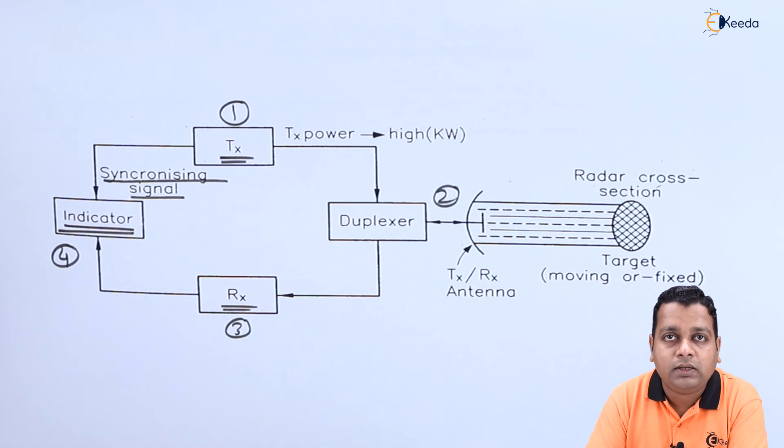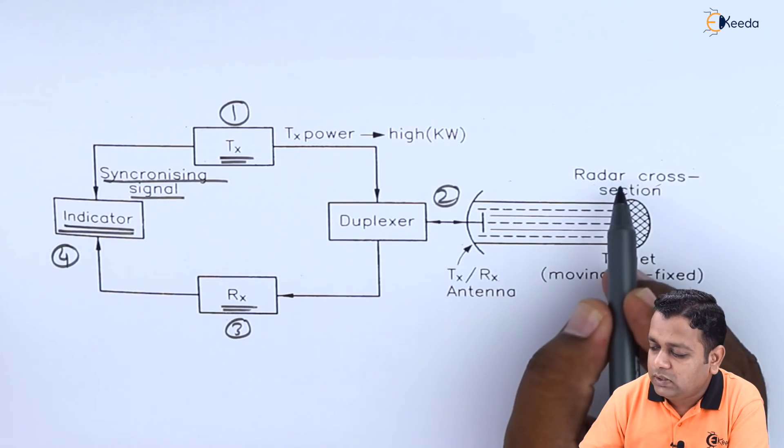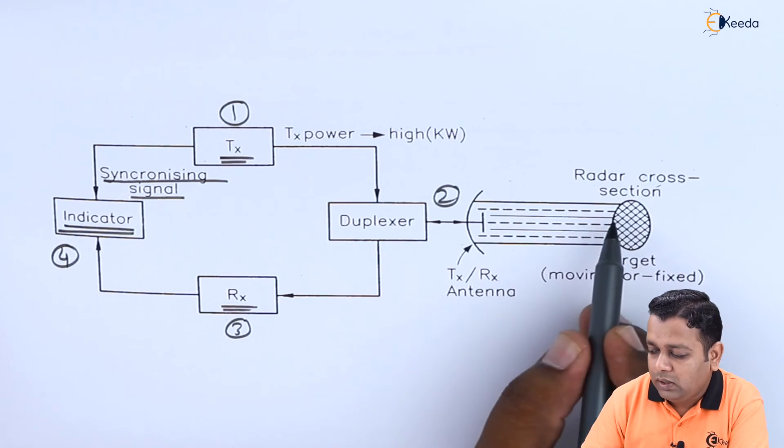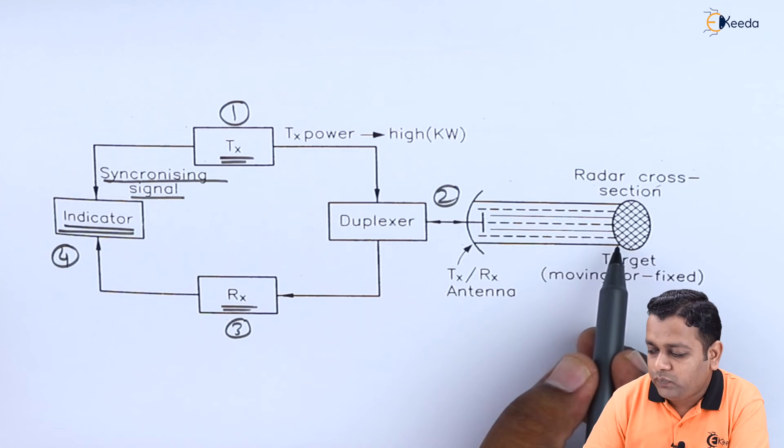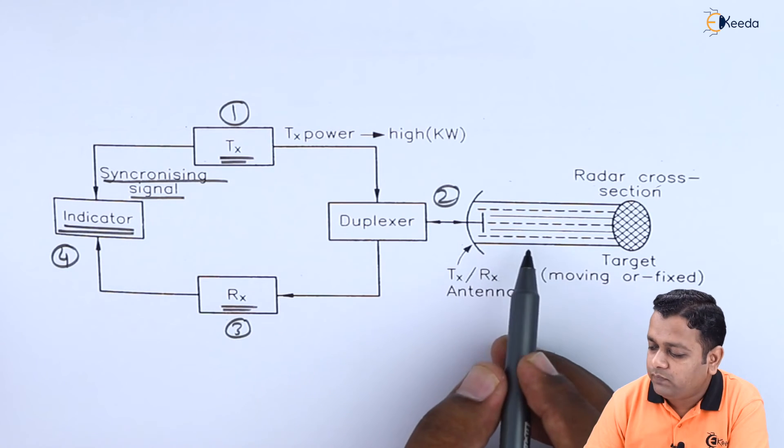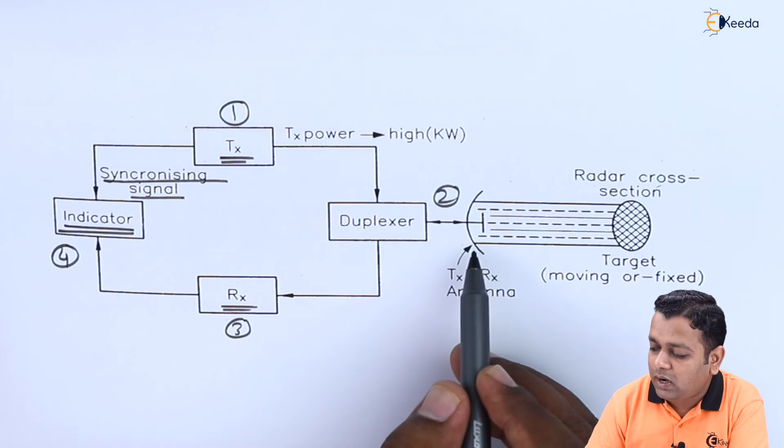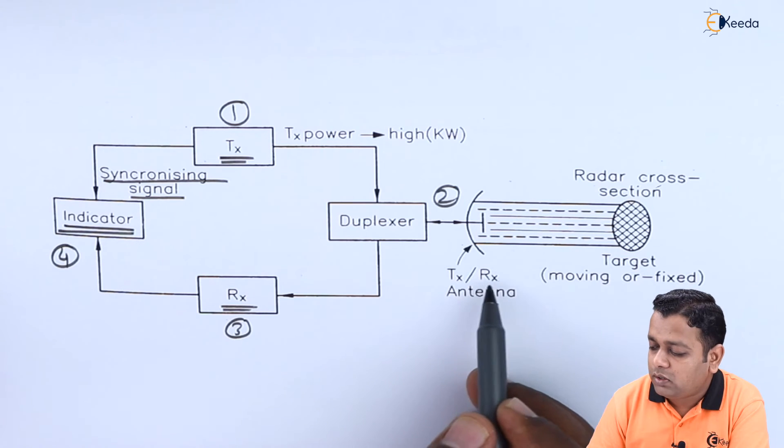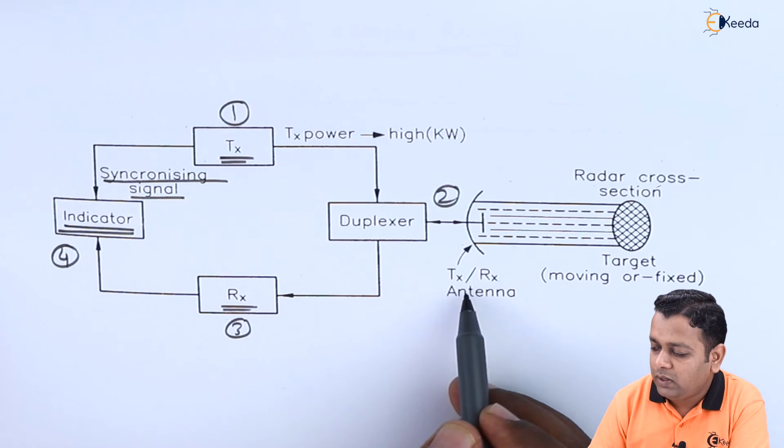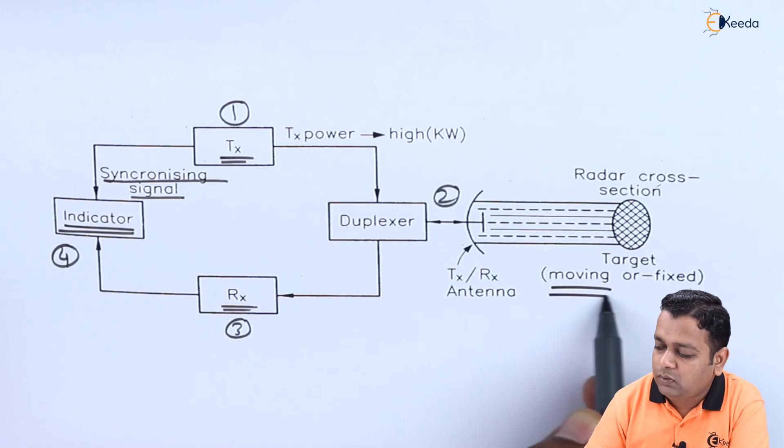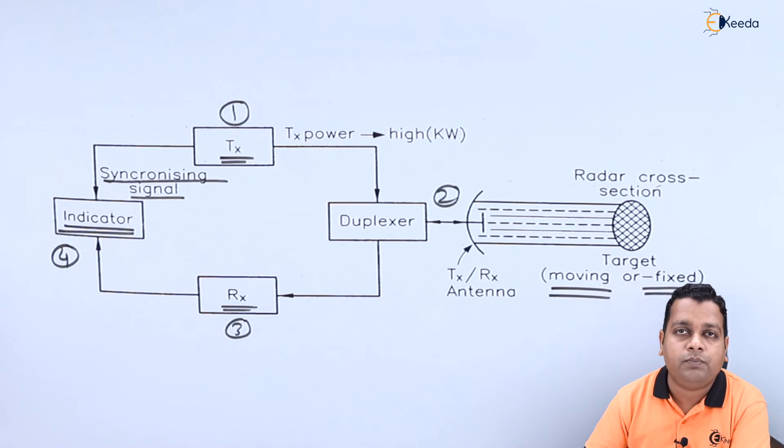How high or at what particular elevation level that target is having a motion. That motion velocity is also detected. This is the radar cross section that has been incident and receiving the reflected waves with the help of the duplexer antenna working as both transmission and receiving. The target may be either in motion or it may be a fixed one place.